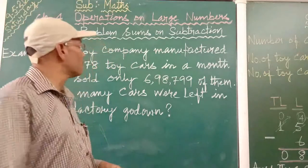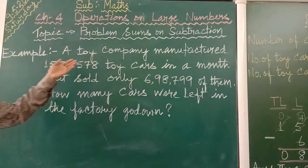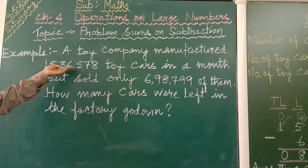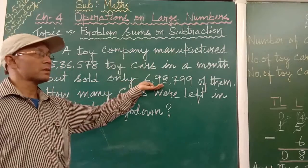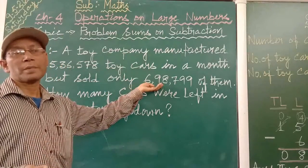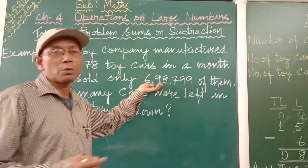So here what we have to do: the company has produced this much and he sold this much. So what we have to do? We have to subtract. So now I will show you how to subtract.